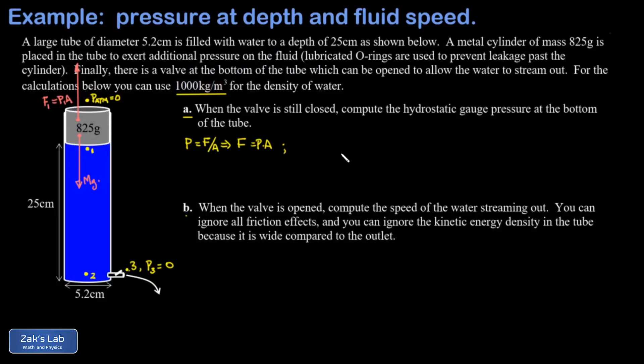This means F1 equals P1 times the cross-sectional area of that cylinder. Let's express that the forces balance on this metal cylinder: mg pointing down equals P1 times A pointing up. We're interested in solving for P1, so P1 equals mg over A, where A is the cross-sectional area.